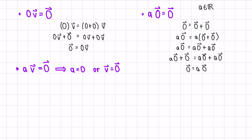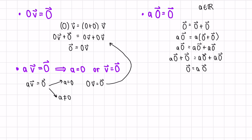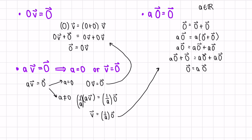The next property states that if a scalar a times vector v equals the zero vector, then either a is zero or v is the zero vector. If a is zero, then 0·v equals the zero vector, which we know is true. If a is not zero, we can multiply both sides by one over a, giving v equals (1/a)·zero vector. Since any scalar times the zero vector is the zero vector, v must equal the zero vector.